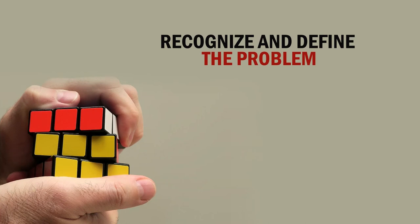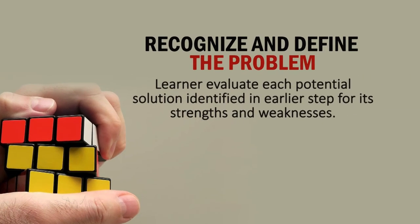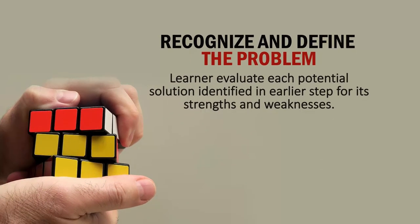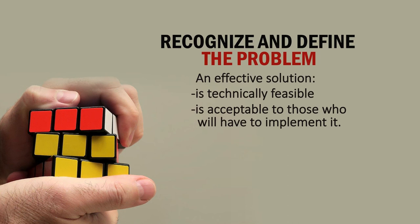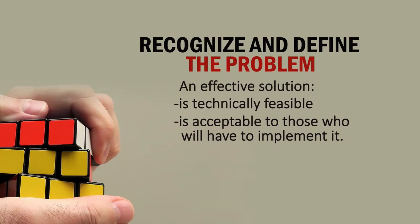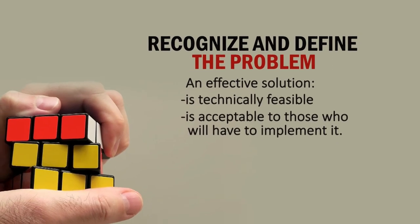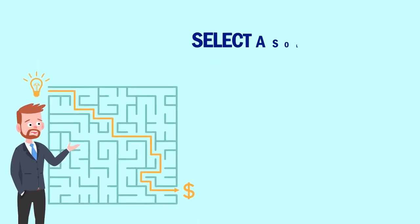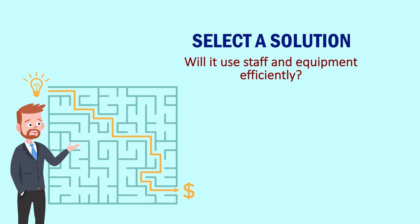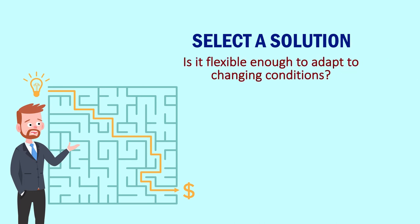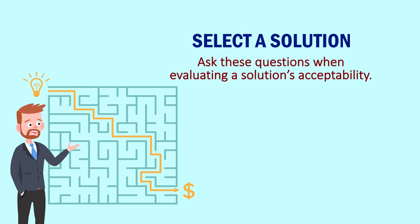Then learners find the best solution by evaluating each potential solution identified in the previous step for its strengths and weaknesses. They select a solution that is most effective by applying two general criteria: the solution must be technically feasible, and it must be acceptable to those who will have to implement it. Feasibility can be determined by asking questions like: Can it be implemented within a reasonable time? Can it be done within the cost limit? Will it work reliably? Will it use available staff and equipment efficiently? Is it flexible enough to adapt to changing conditions?